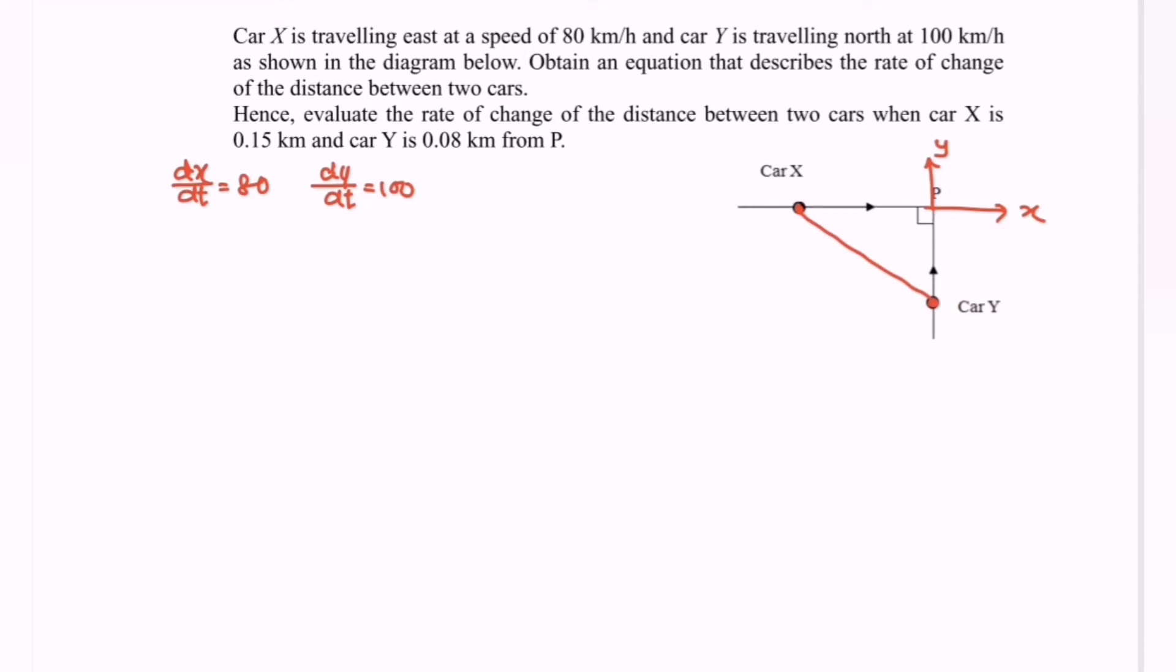So the equation will be - here we have X and Y and we denoted it as H for the hypotenuse. So the equation will be X² + Y² = H², where we have the Pythagorean theorem. So next, evaluate the rate of change of the distance between the two cars.